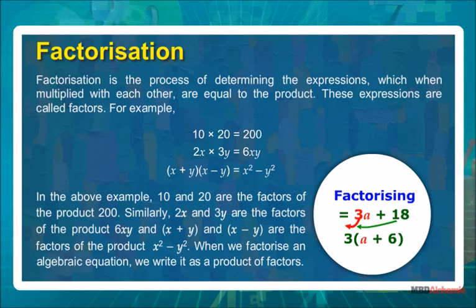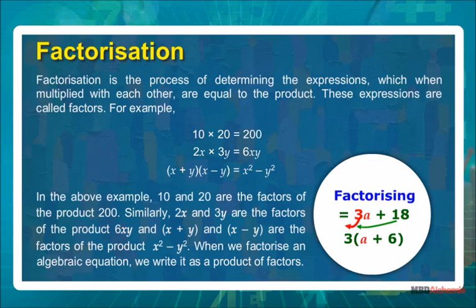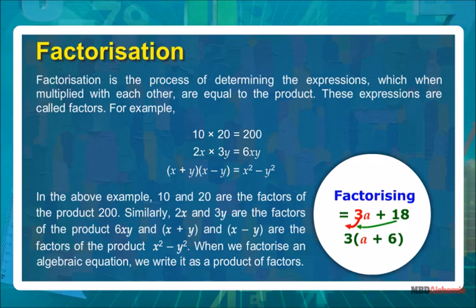In the above examples, 10 and 20 are the factors of the product 200. Similarly, 2x and 3y are the factors of the product 6xy, and x plus y and x minus y are the factors of the product x square minus y square. When we factorize an algebraic equation, we write it as a product of factors.